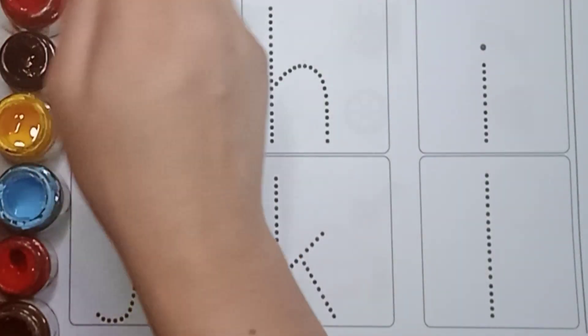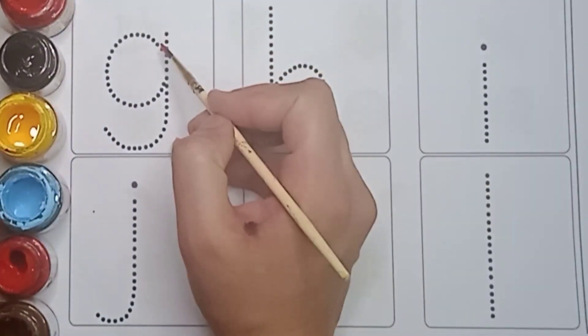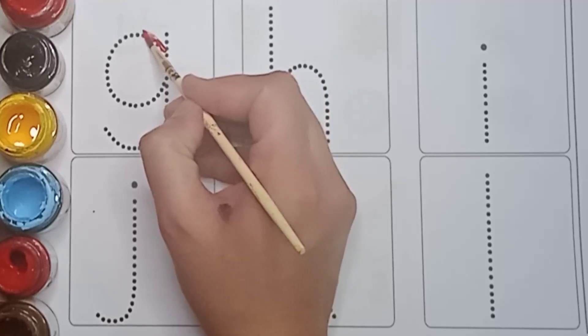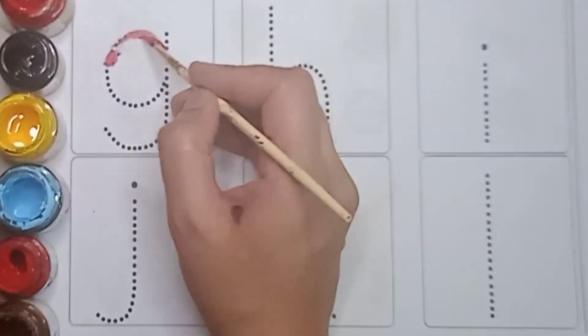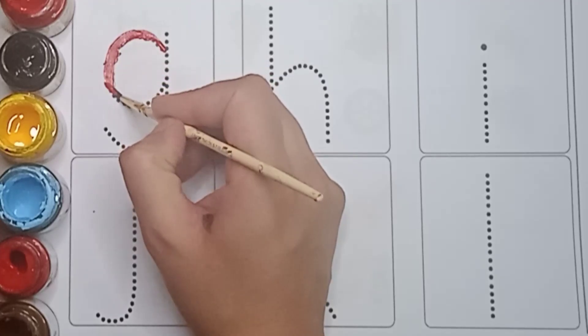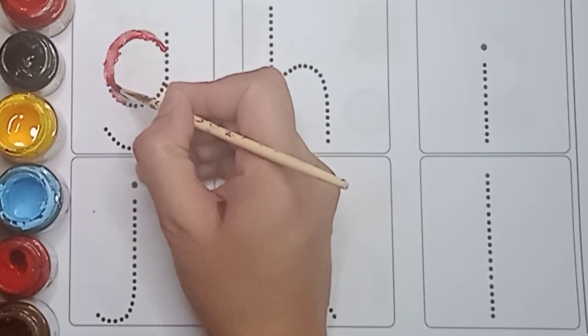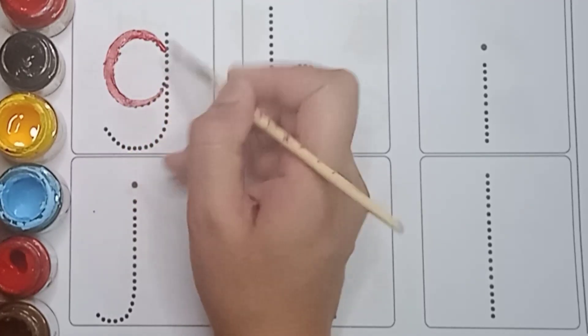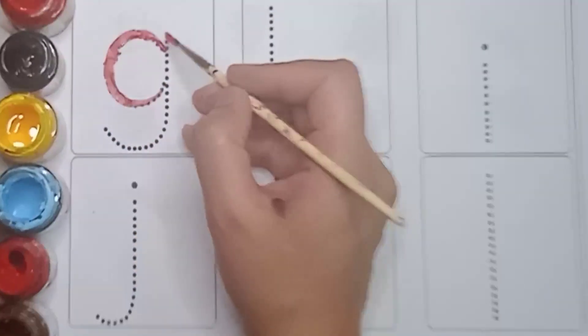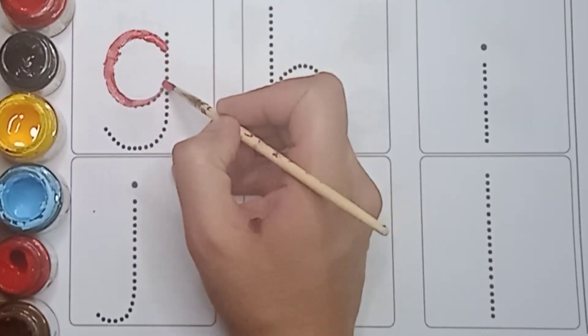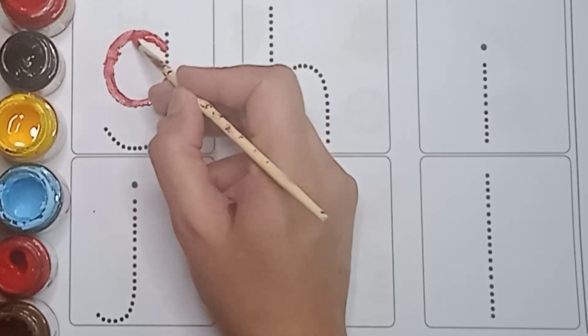Now let's start writing small letter G to L. Do you know how did we write it? Now let's start it. First make a C here like this. Red color. Red color. First make a C here.